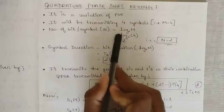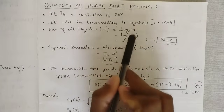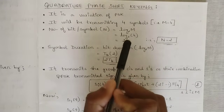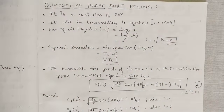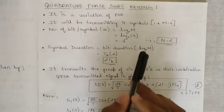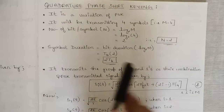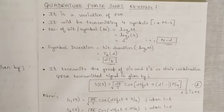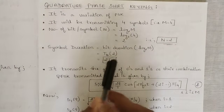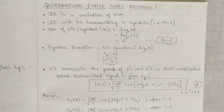The number of bits per symbol, n, is equal to log base 2 of M. So log base 2 of 4 gives us n equal to two. Also, the symbol duration is equal to the bit duration multiplied by log M base 2, that is two times Tb. Tb is the time period required for one single bit. The symbol duration is given by two times Tb, since M is four and n is two.